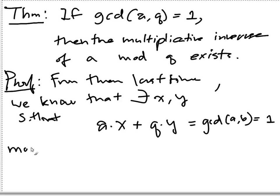And then you can mod both sides by q, and then you get that a times x plus 0 equals to 1, everything mod q.